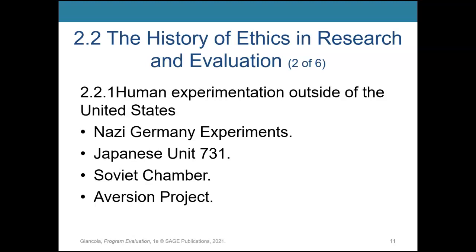Many of these harmful instances are somewhat famous: the Nazi Germany experiments, Japanese Unit 731 — which was very similar to the Nazi Germany experiments — the Soviet chamber, and the aversion project in South Africa. These are all instances where human beings were subjects of scientific testing, experimented on using poisons or surgeries without real regard for human feelings or psychological effects. The aversion project specifically had to do with South Africa's attempt to convert homosexuals to heterosexuals, without regard to psychological or long-term effects.